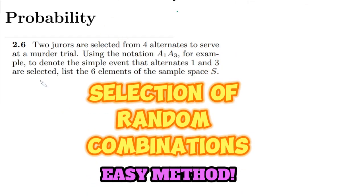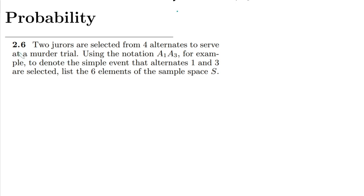Welcome back guys, I hope all of you are fine. This is the second chapter of our book, and here is question 2.6: two jurors are selected from four alternates to serve at a murder trial.